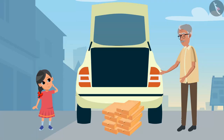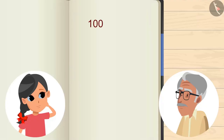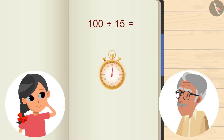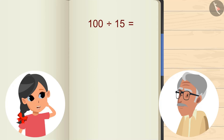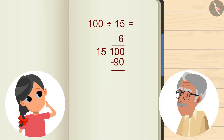So the height of the dicky is one meter, that is 100 centimeters. Now tell me, how many boxes can be stacked on top of each other? For this, we have to divide 100 by 15. You can pause the video and try to calculate the answer. We are left with six and ten, so six boxes can be stacked on top of each other.